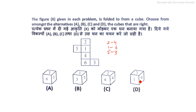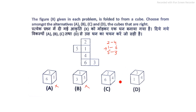Looking at the answer options: in one option we see six and one shown adjacent — but one and six are opposite faces so they cannot be adjacent, so this is not the answer. In another option, three and five appear adjacent — also an opposite pair, so this is also not the answer. In another, two and four appear adjacent — another opposite pair, so this is also wrong. Therefore our answer is D.